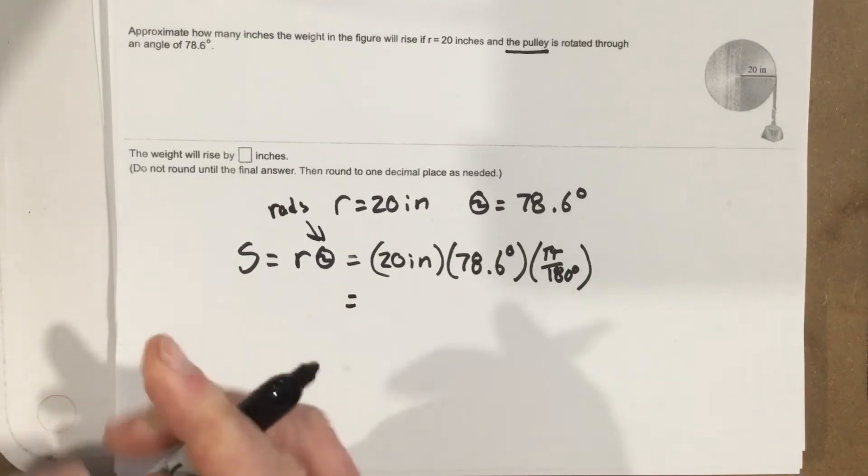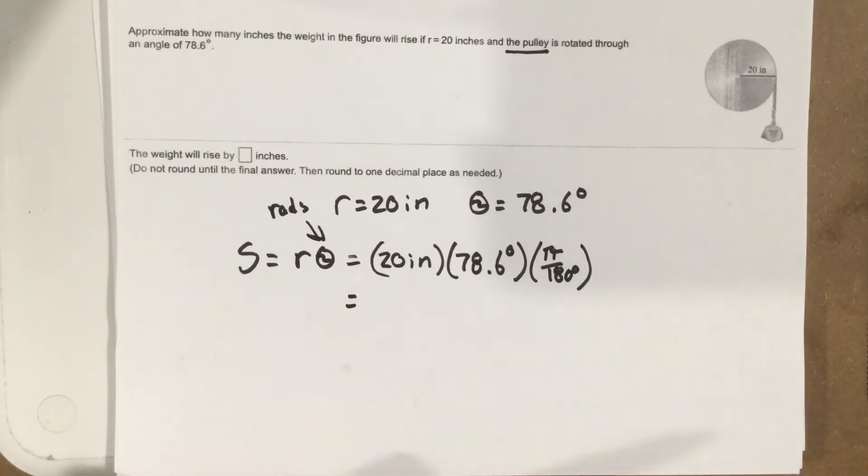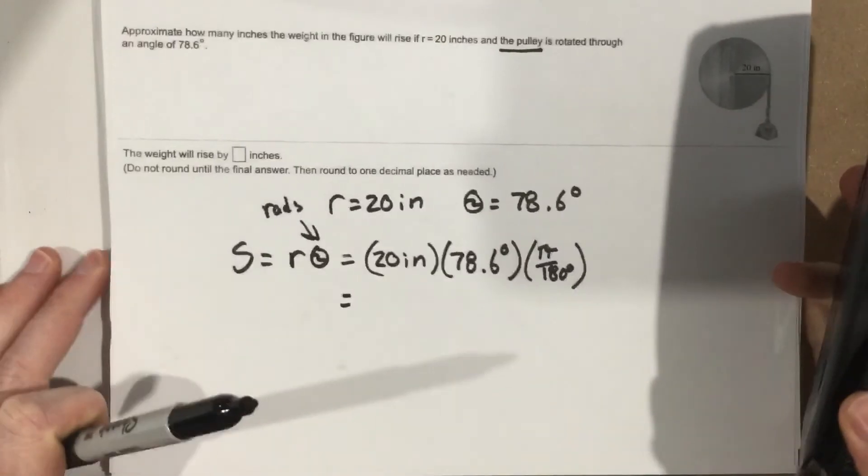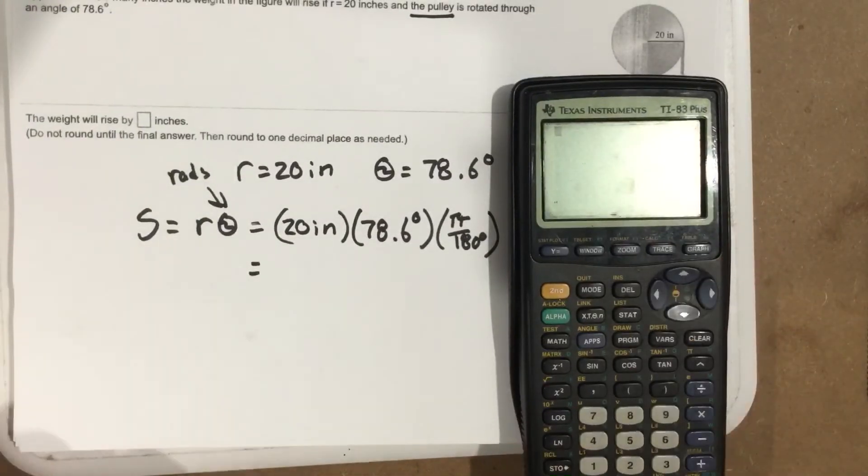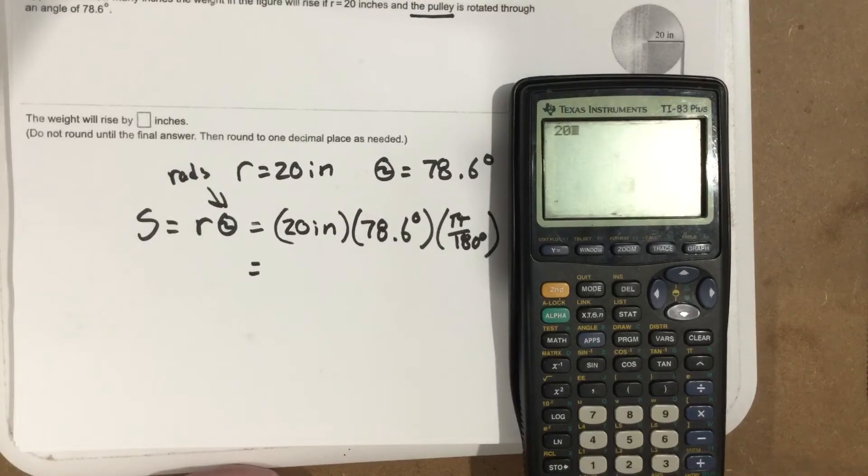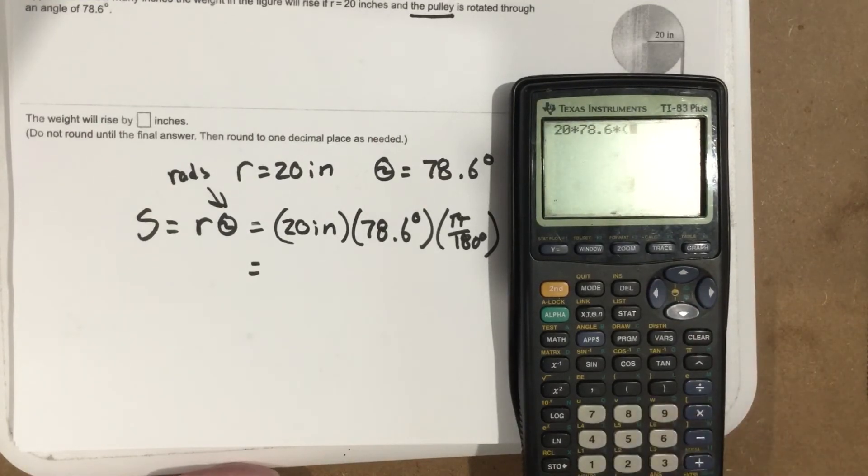So let's plug this in the calculator. I get 20 times 78.6 times pi divided by 180.